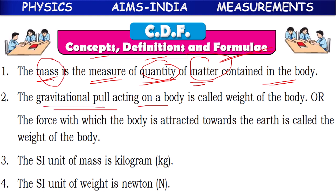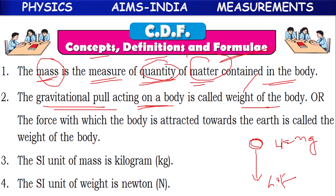The gravitational pull acting on a body is called weight of the body. If any body is on the earth, it will be attracted by the earth because of gravitational force. The gravitational pull acting on the body because of the earth is called weight of the body, W = mg — mass into g (acceleration due to gravity). The force with which the body is attracted towards the earth is called weight of the body.